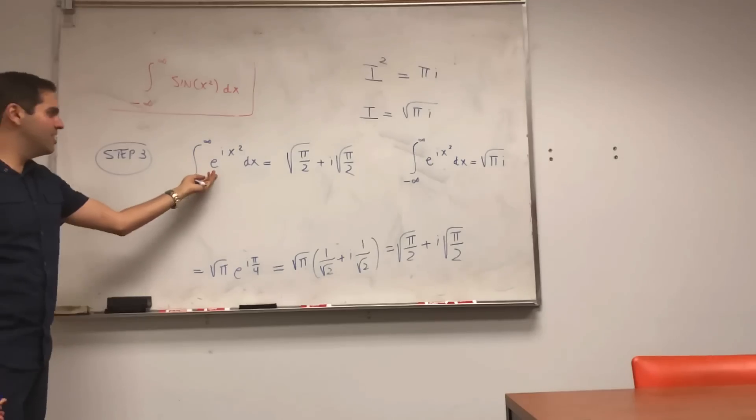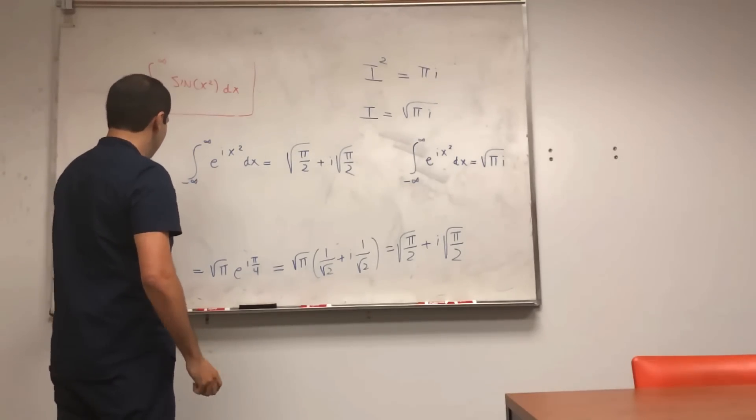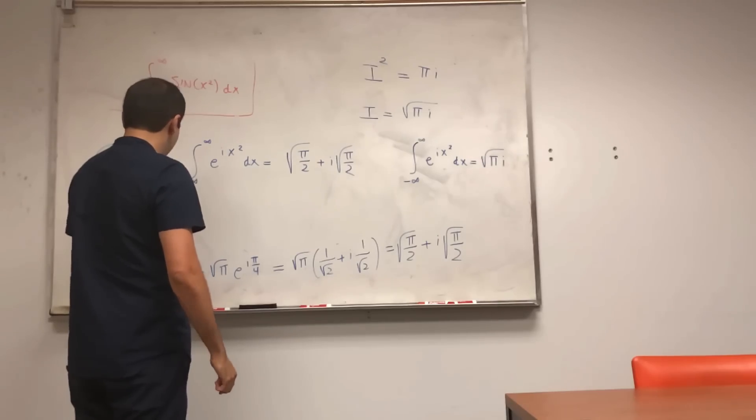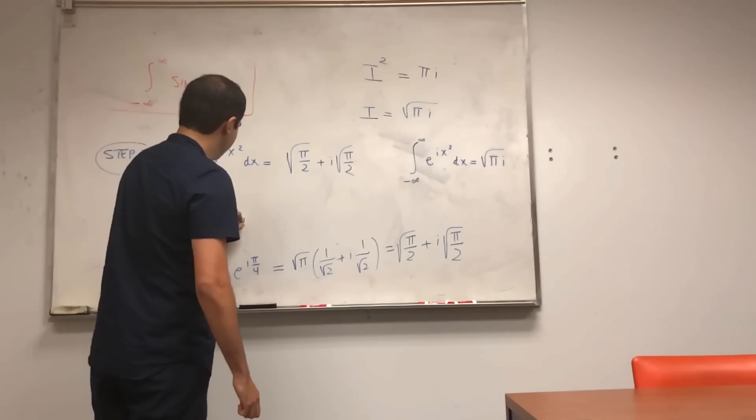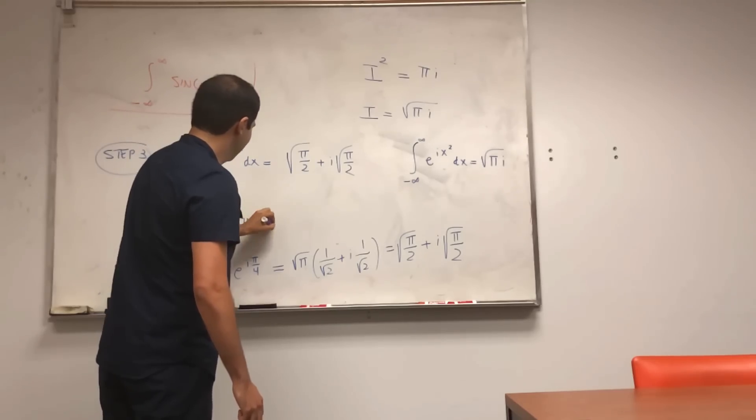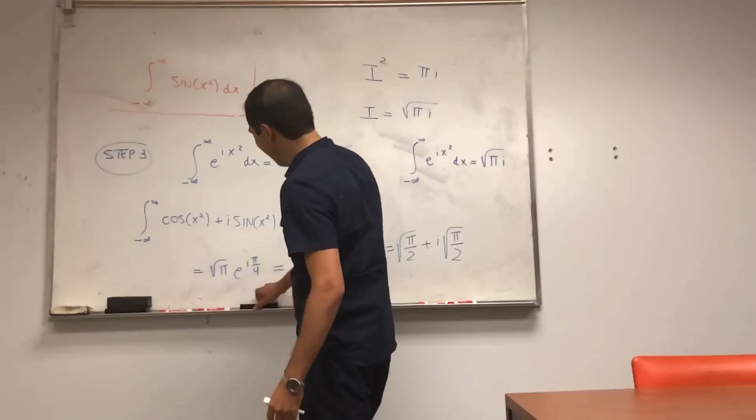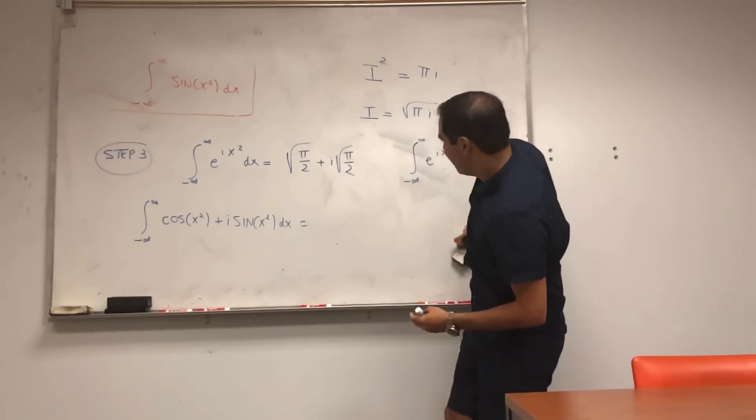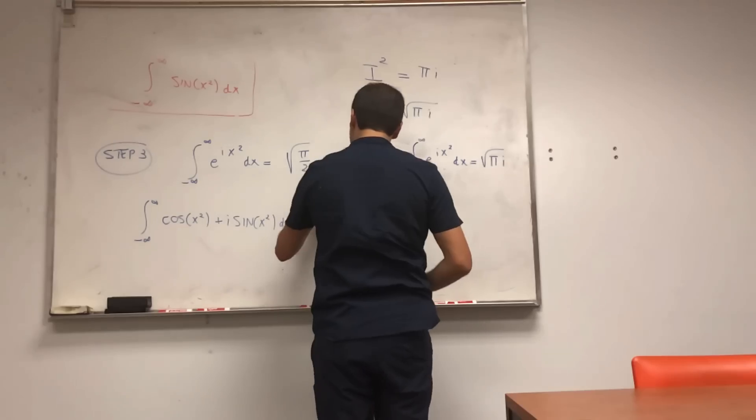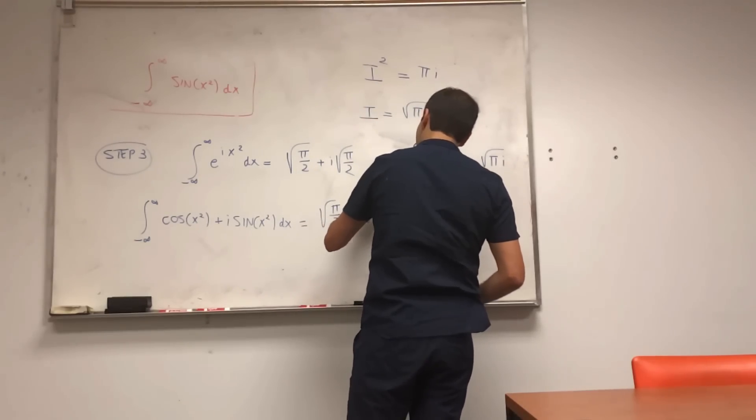And now the last thing we want to do, we want to split this up into real and imaginary parts. So e to the ix squared becomes cosine x squared, plus i sine of x squared dx. I know, i sin, very bad, okay.